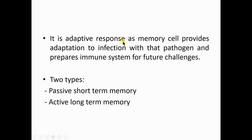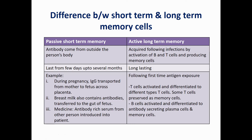There are mainly two types of immunological memory: short-term immunological memory and long-term immunological memory. Short-term immunological memory is of the passive type, and long-term immunological memory is of the active type. Passive short-term memory is acquired by antibodies which come from outside of a person's body — antibodies introduced into the person's body lead to passive short-term memory.